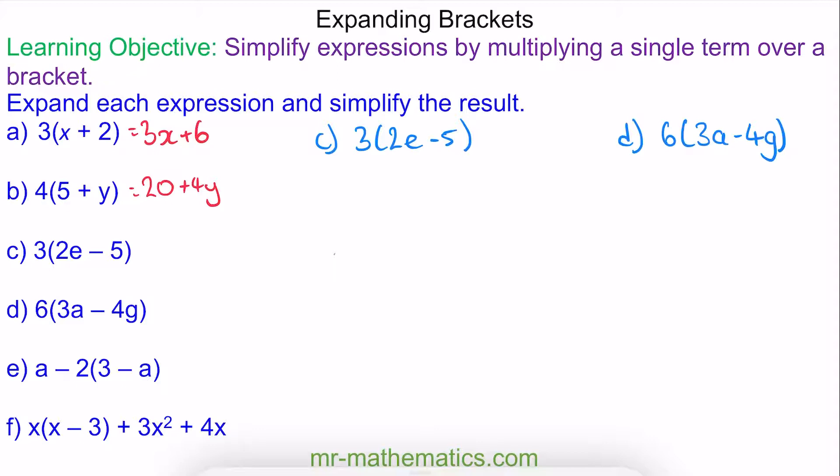So for question C, we have 3 times 2e, which is 3 times 2 to make 6, and the e term. And then 3 times negative 5, which is negative 15.